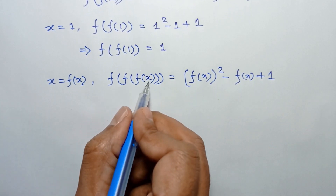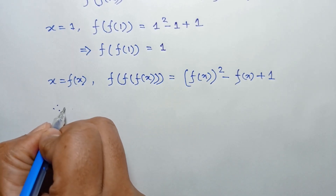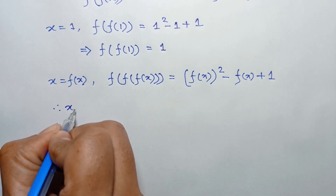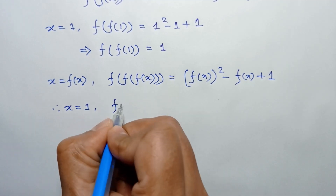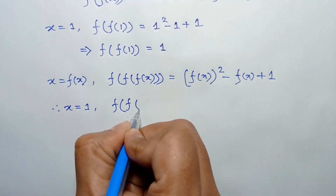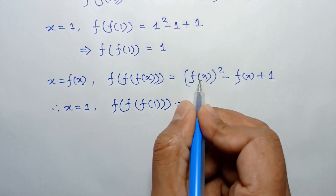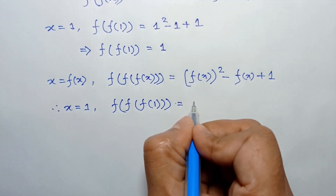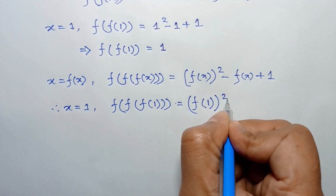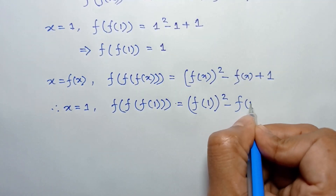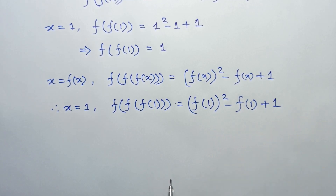Now putting x equal to one in this function, we will get f(f(f(1))) equal to f(1) squared minus f(1) plus one.